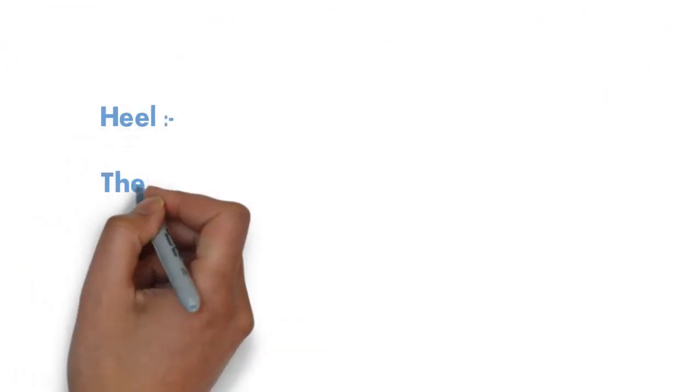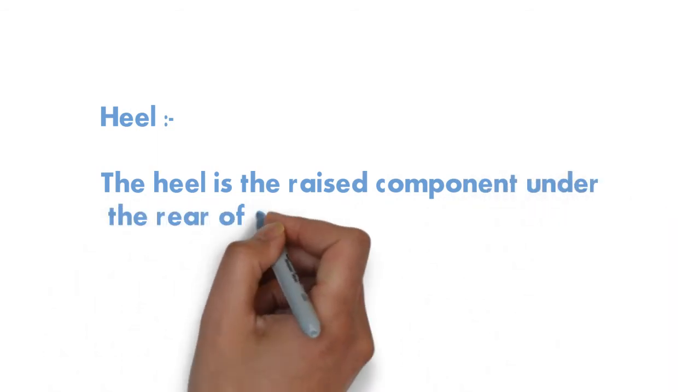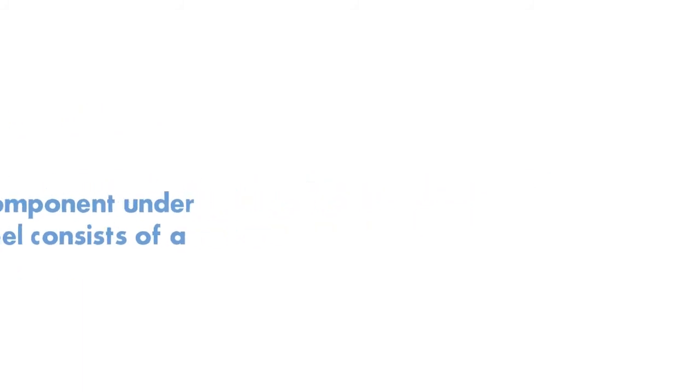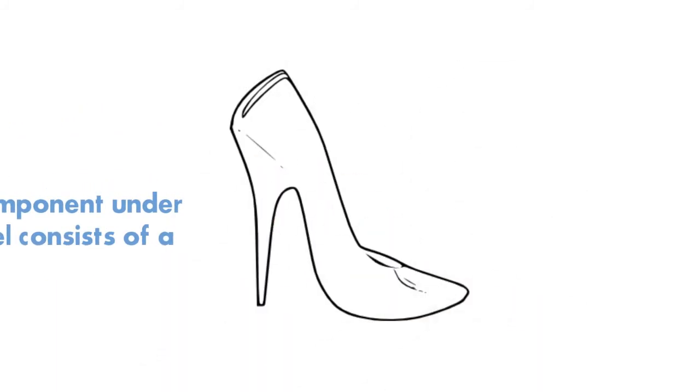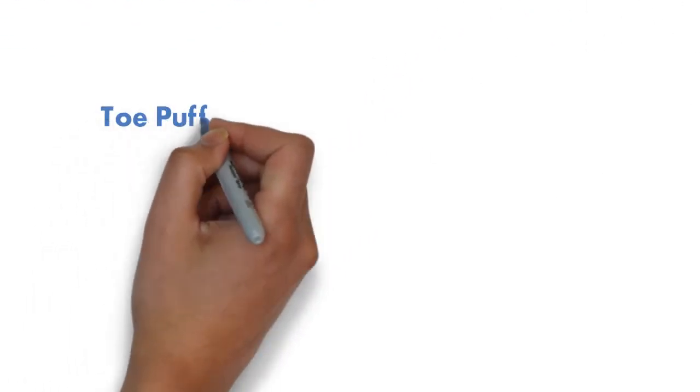Fifth one is heel. The heel is the raised component under the rear of the shoes. Heel consists of a cork region or any of the shoes which help to the raising the height of the shoe.